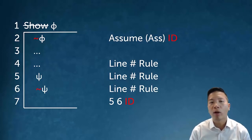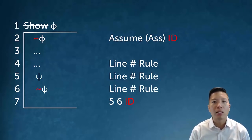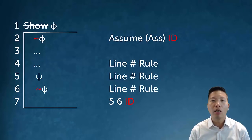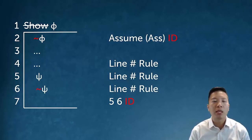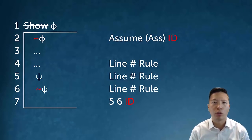I'm able to box off all the lines that led to my contradiction and say I've successfully shown what I wanted to show all along. Why? Because the assumption ID led to a contradiction, which means line 2 must be false, so line 1 — the phi — must be true.